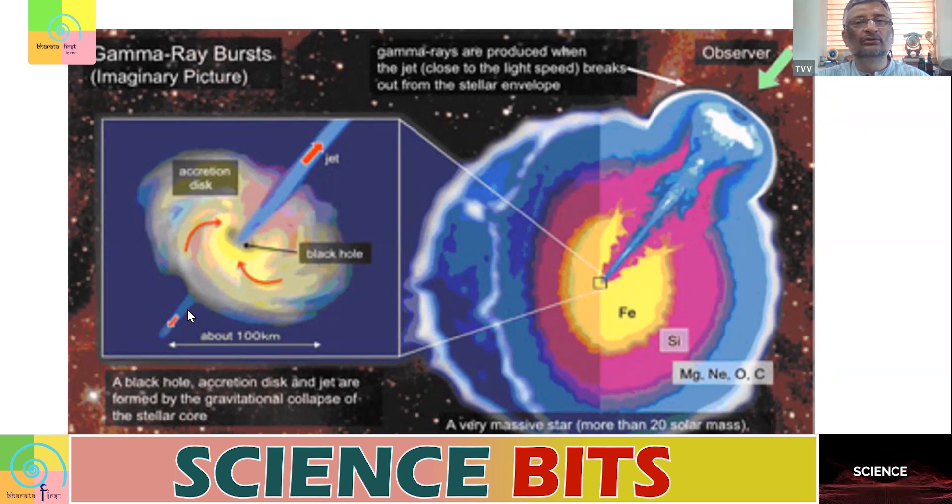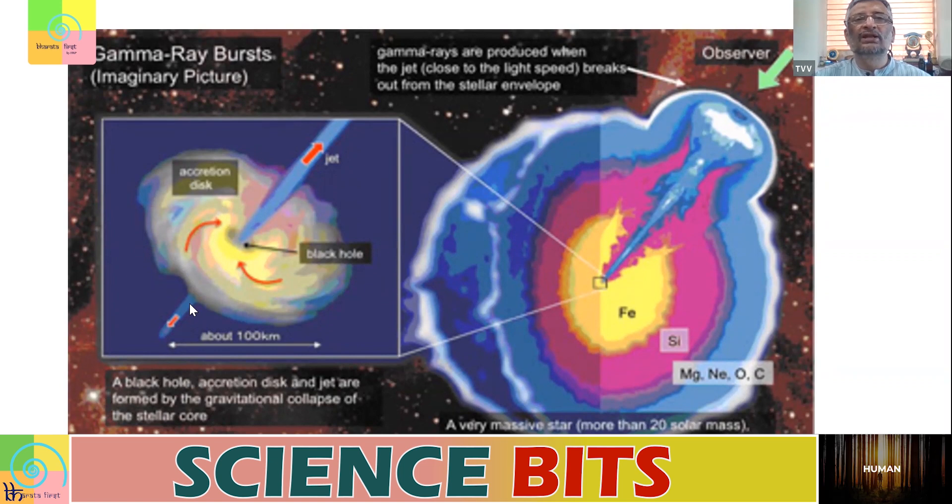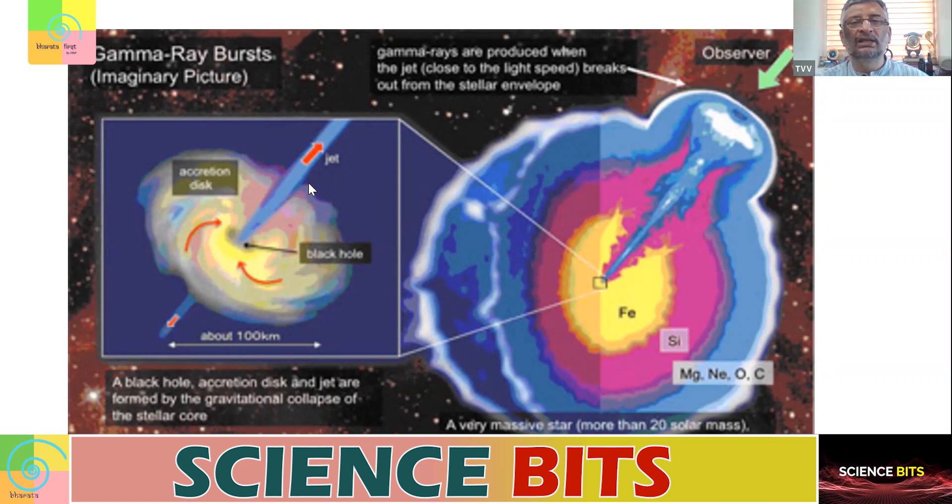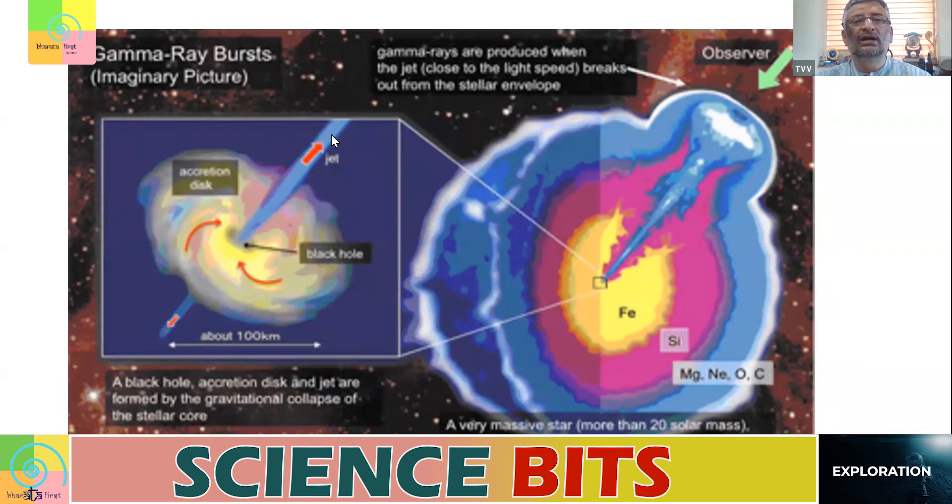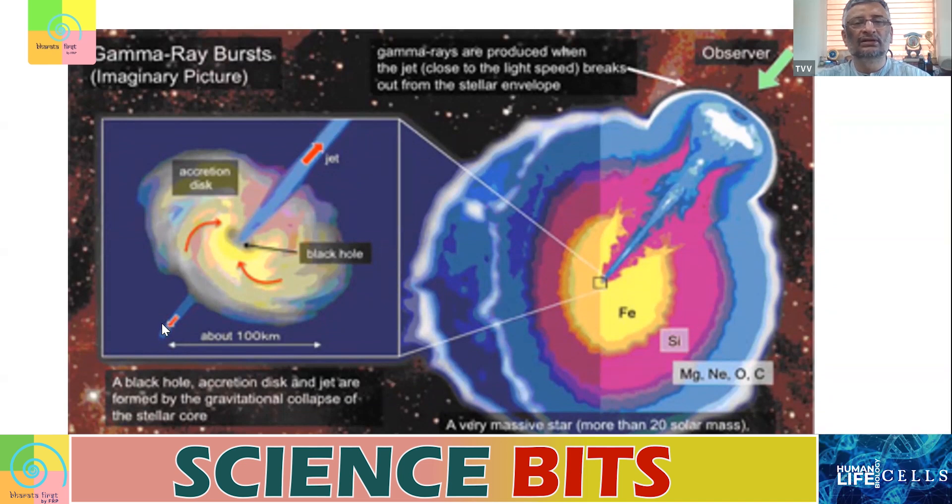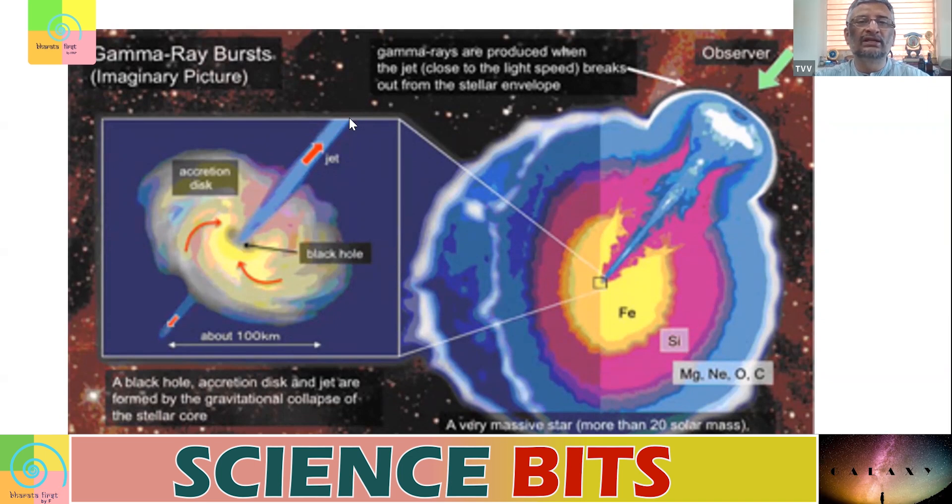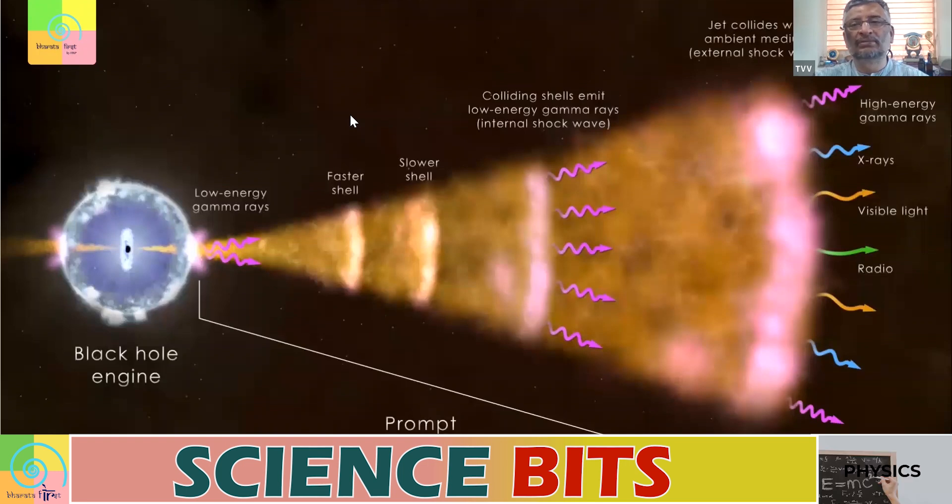The gamma rays don't come in all directions. From sun, for example, the light goes in all directions. But the gamma rays will come out like a beam, like a lighthouse beam. Your lighthouse beam goes in a particular direction and then it rotates. In the same way, when the black hole is getting formed, there will be something called an accretion disk and the jet will be on the axis. If we happen to be in the jet direction, then we will get the gamma ray burst. That's what is happening.